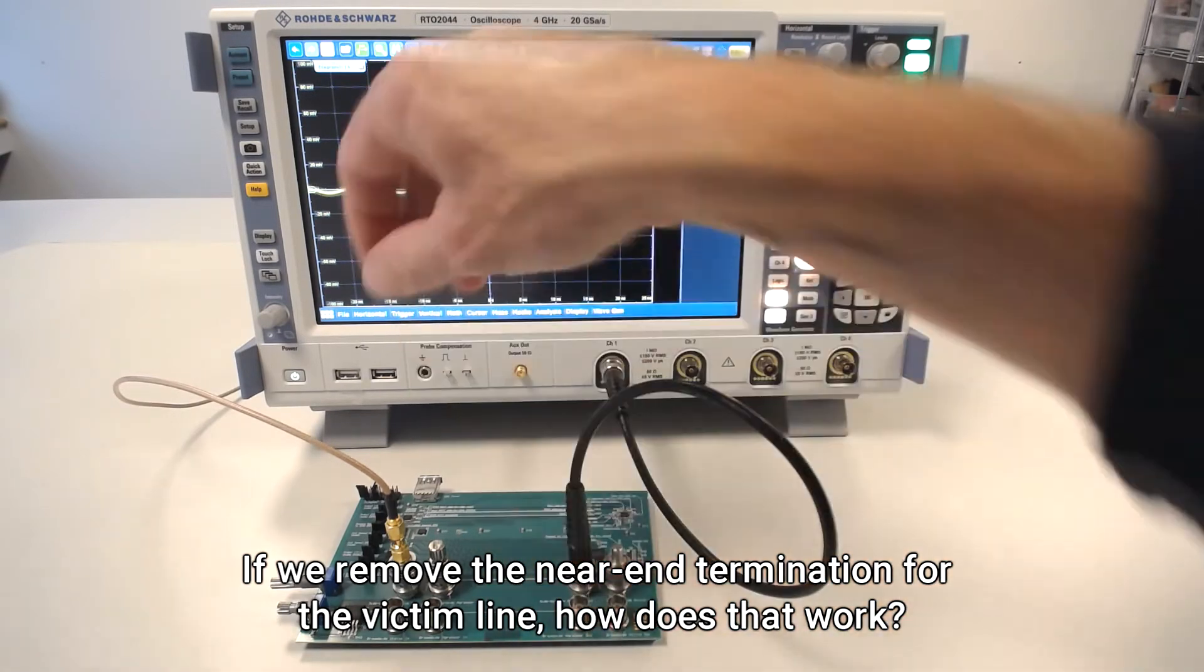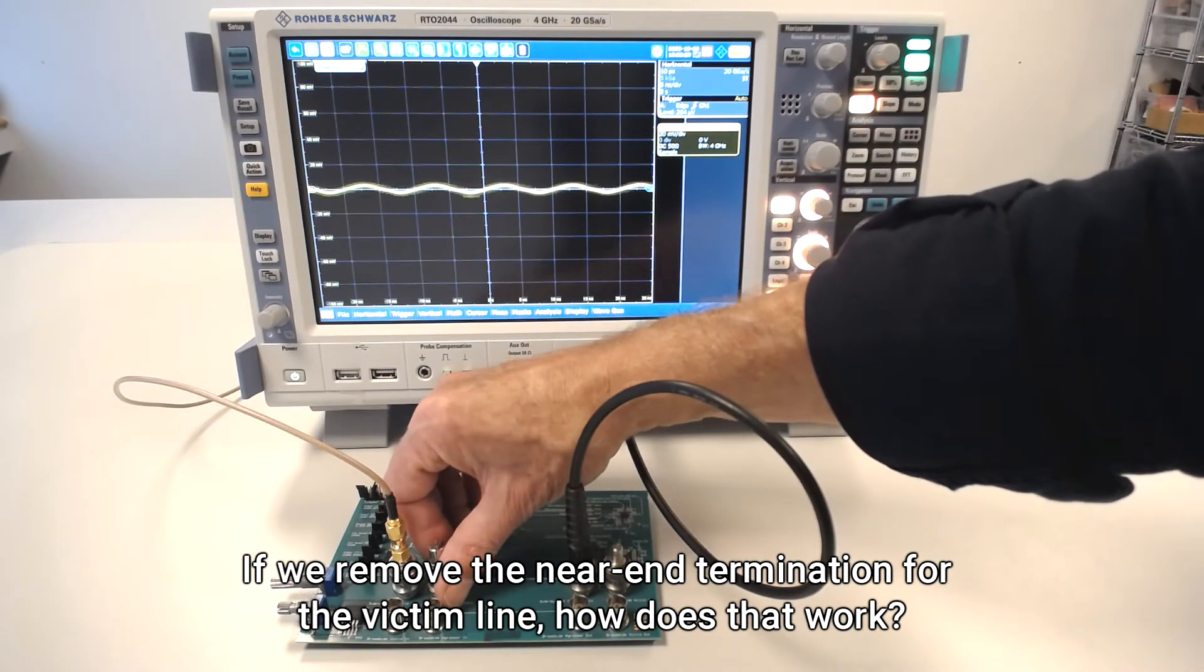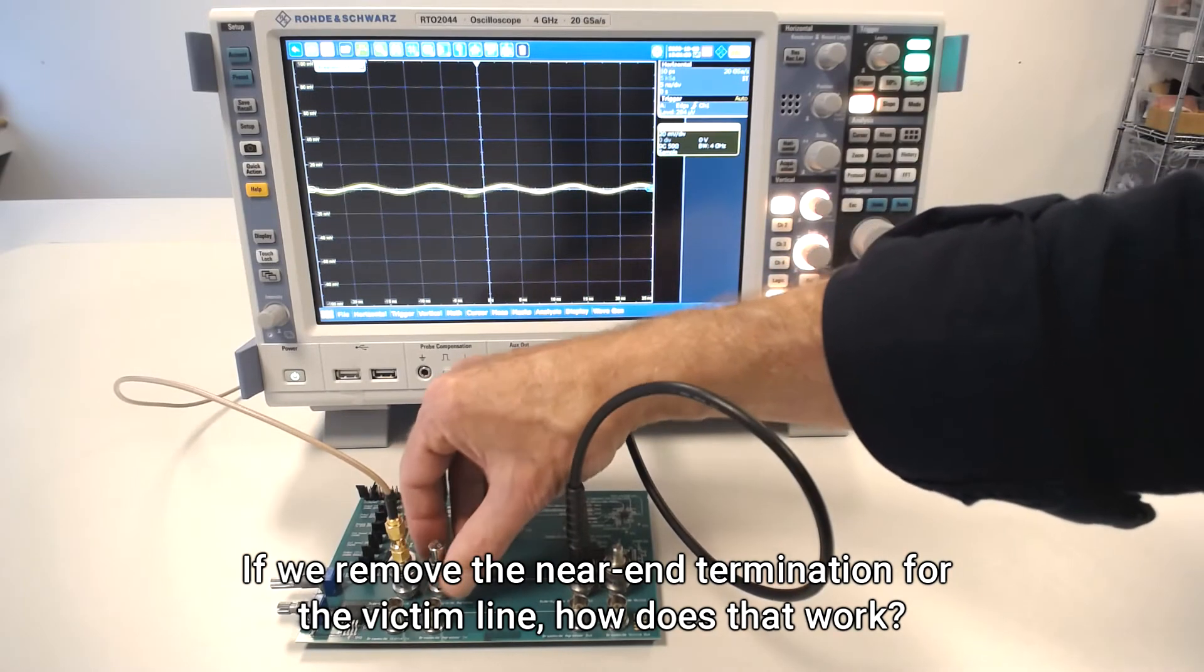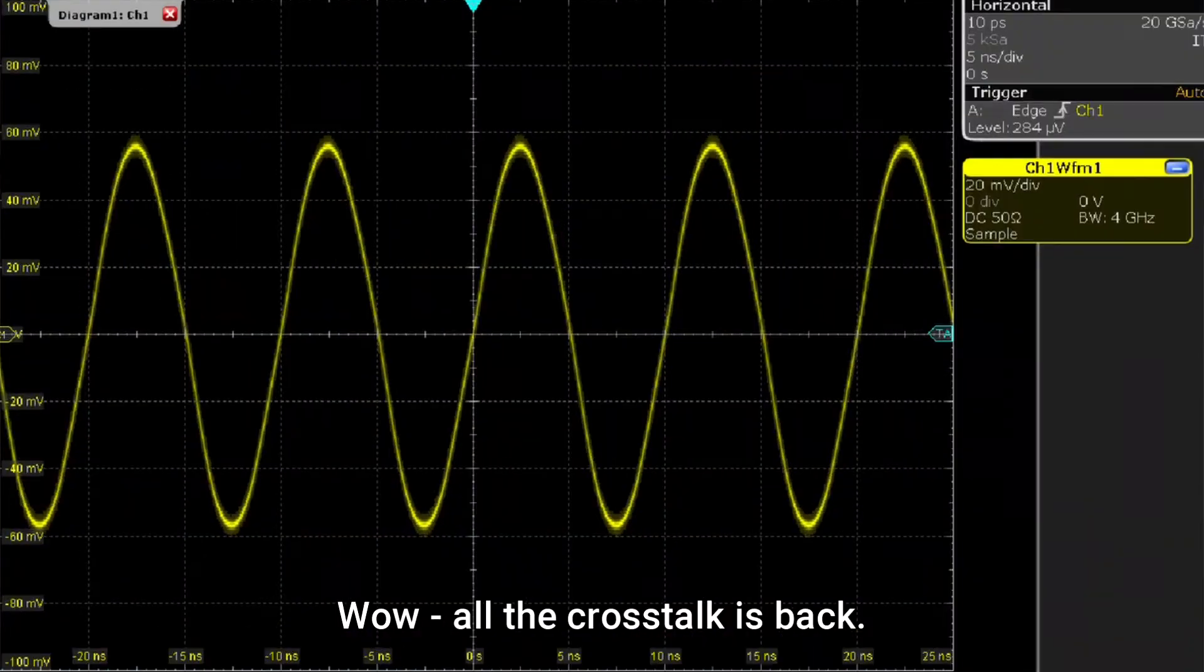If we remove the near-end termination for the victim line, how does that work? Wow, all the crosstalk is back. You know why that is?